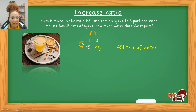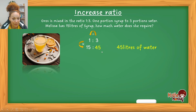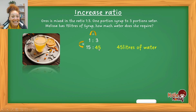If you look at 15 : 45 and simplify by dividing both by 15, you get back to 1 : 3. So increasing and decreasing ratios is the opposite of simplifying. You know it's an increase when the answer is bigger than the initial value given in the question.